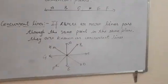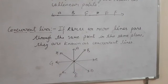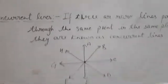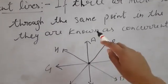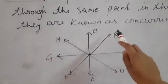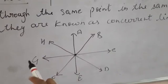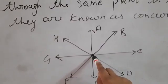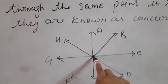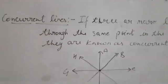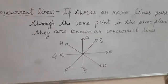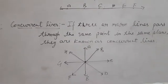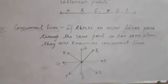Next is concurrent lines. If three or more lines pass through the same point in the same plane, they are known as concurrent lines. For example, lines AE, BF, CG, and DH all meet at one common point. All lines which meet at the same point are known as concurrent lines.